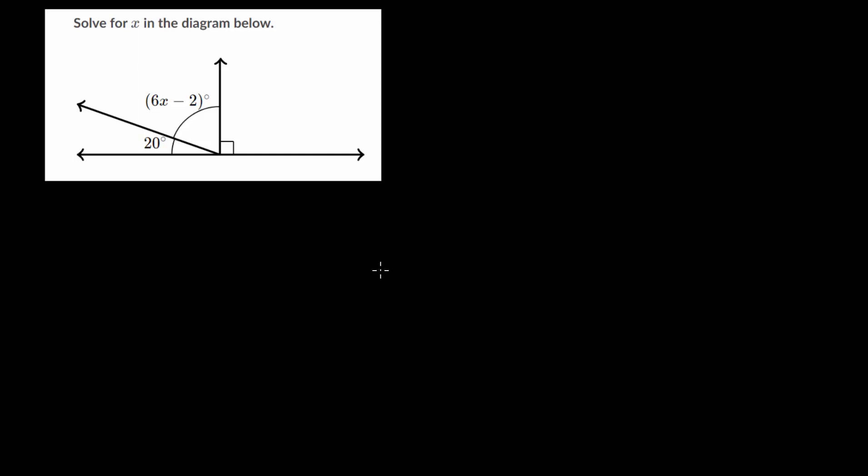Let's look at a couple more examples where we need to find unknown angles using algebra, and we'll be using the different properties of angles. Namely, notice that we have a straight line here, and we're also told that we have a 90 degree angle.